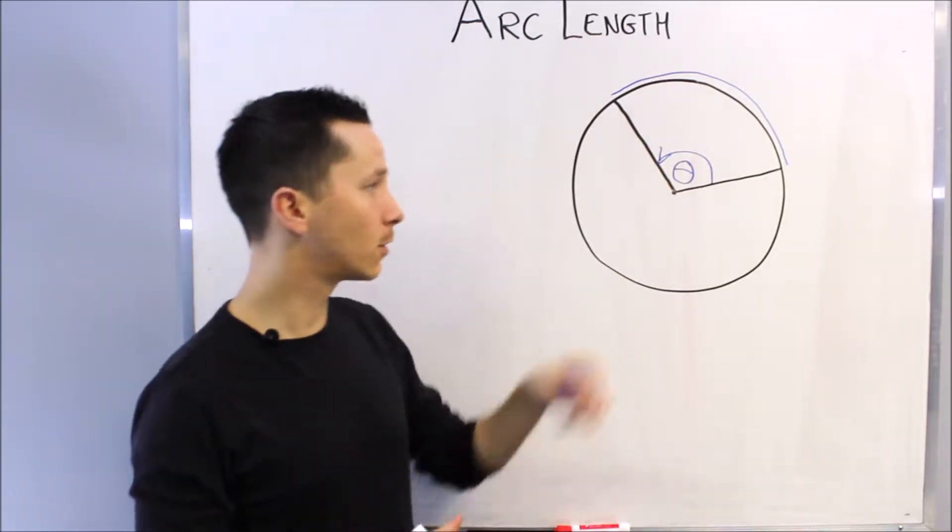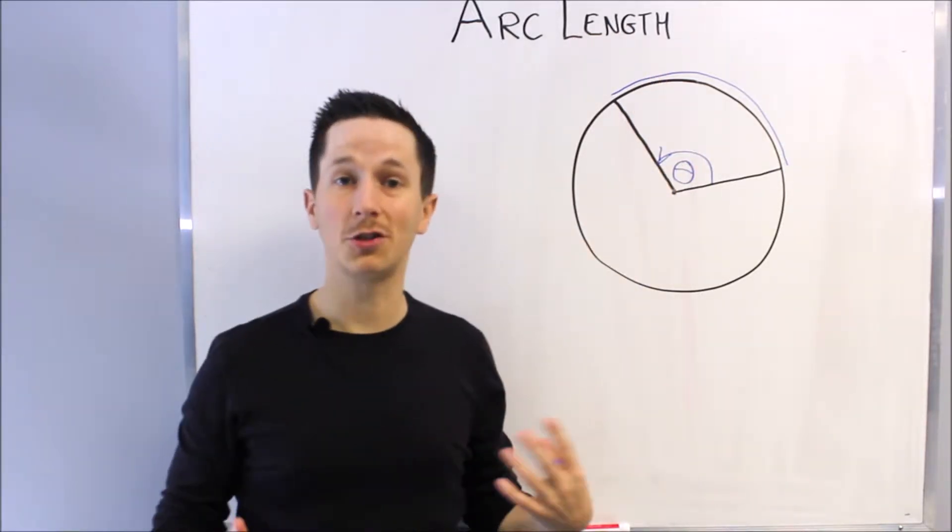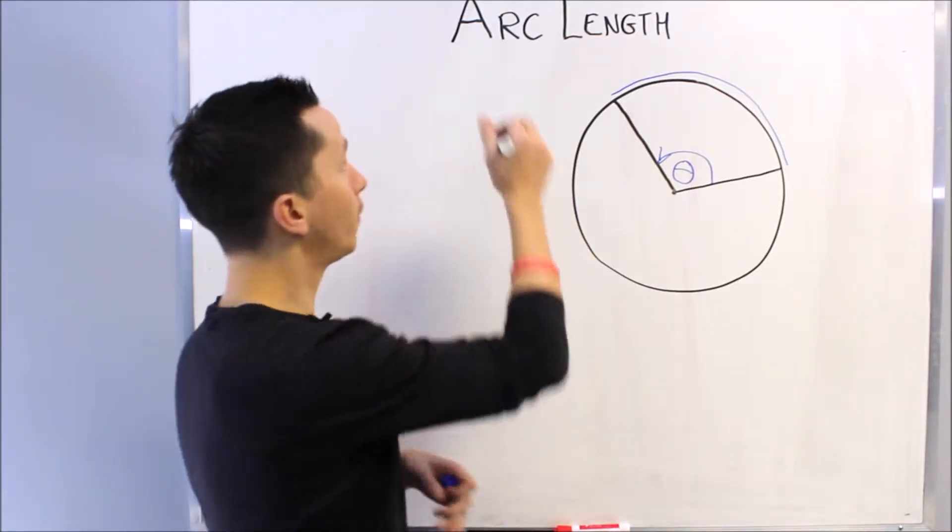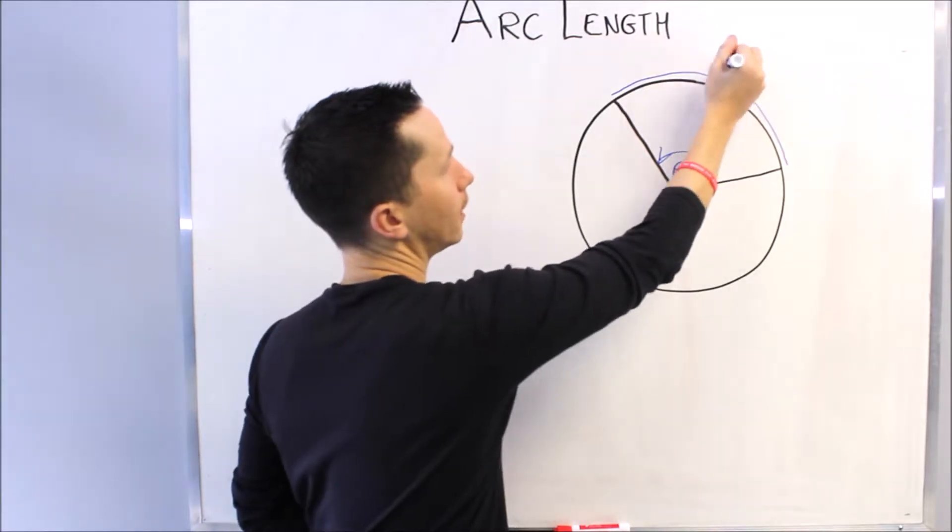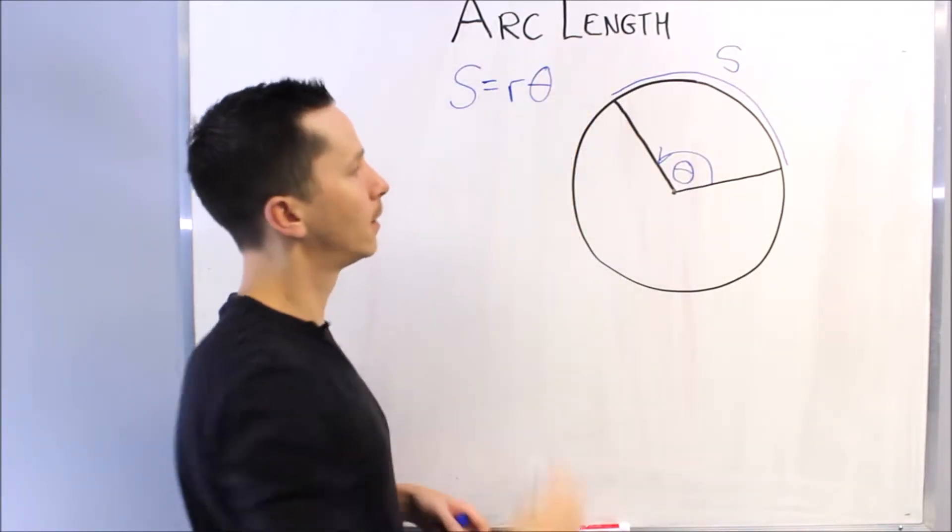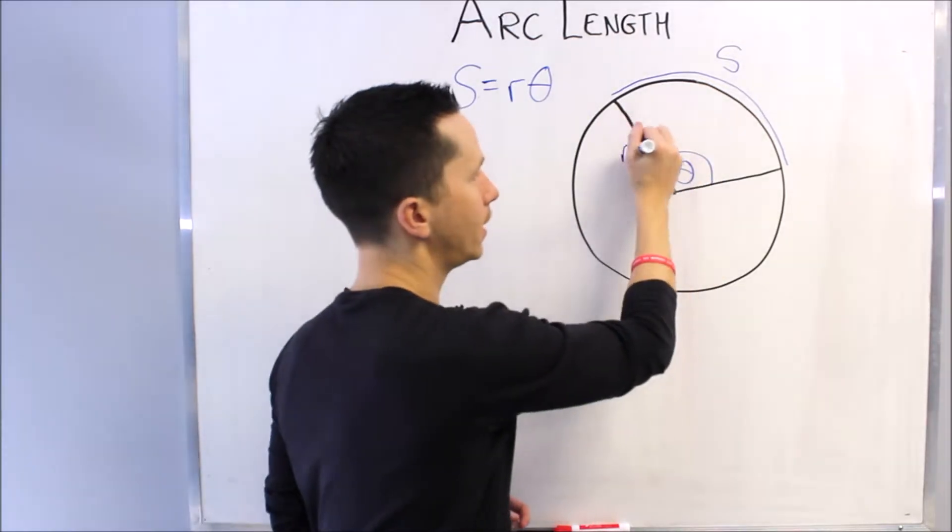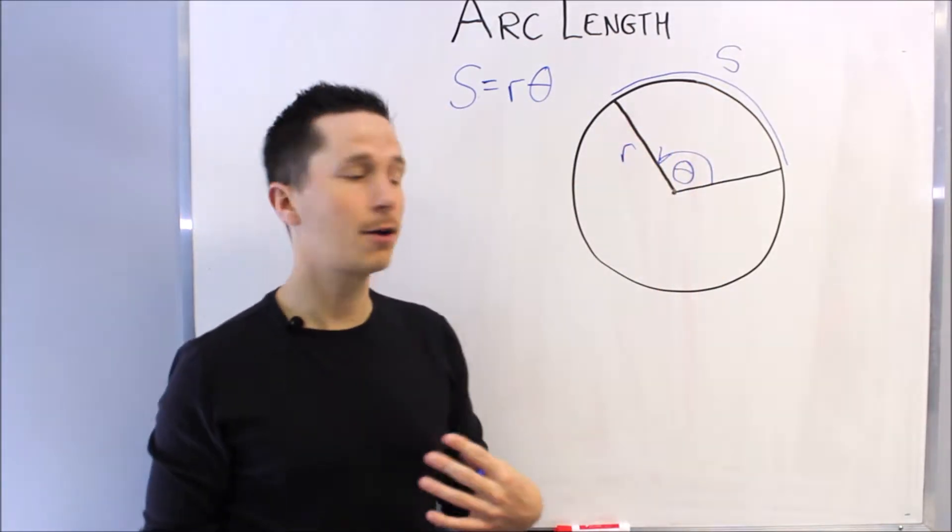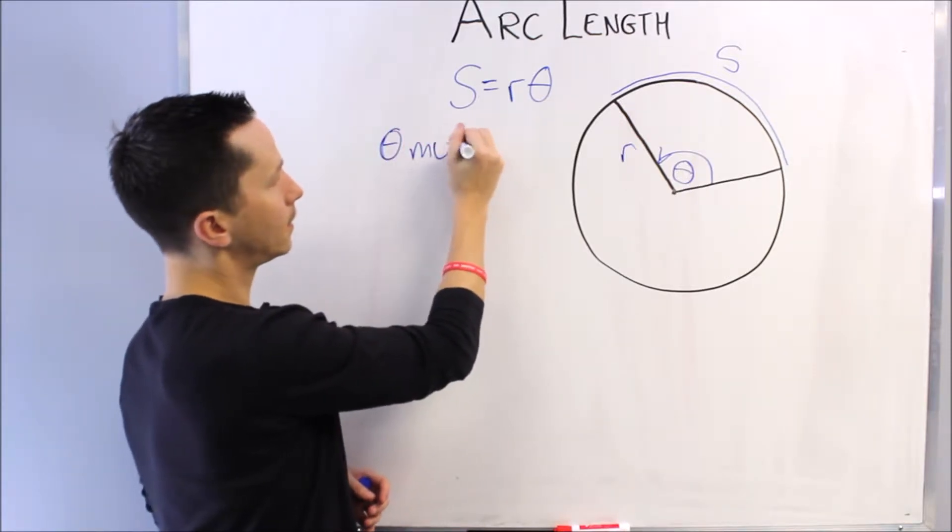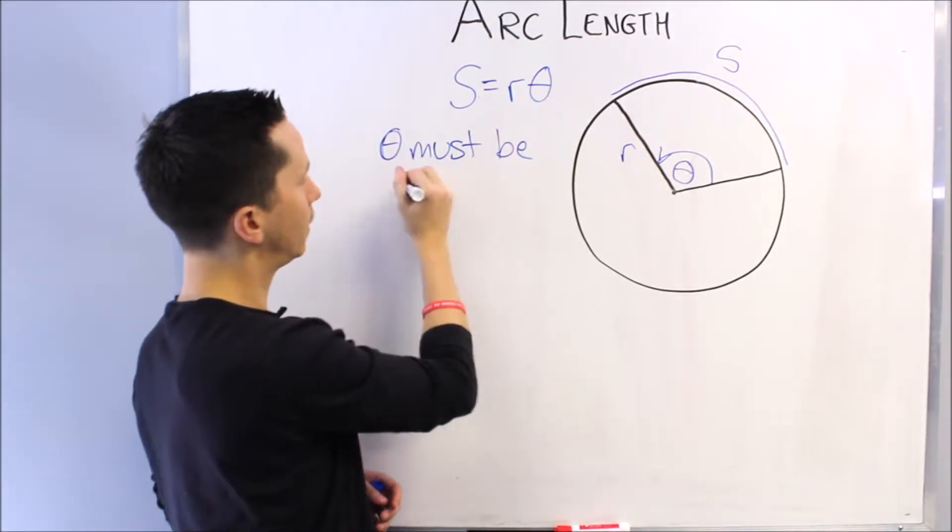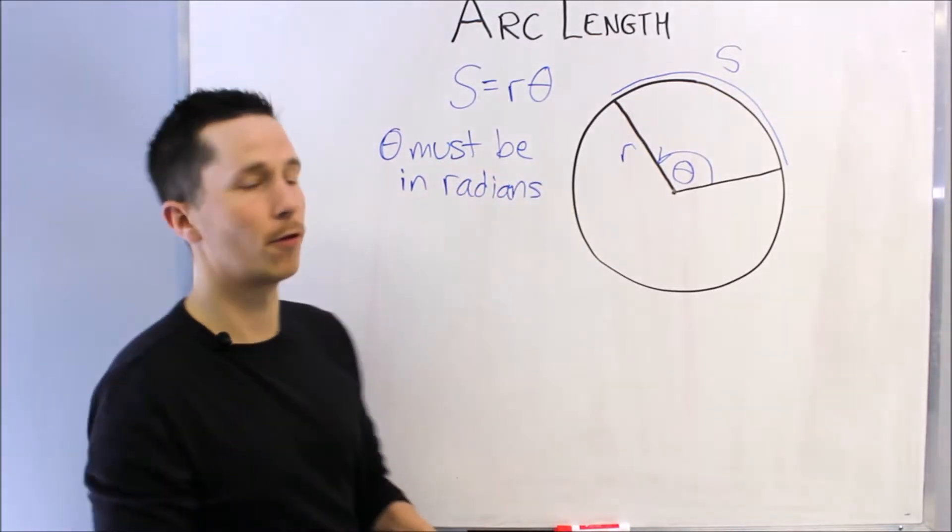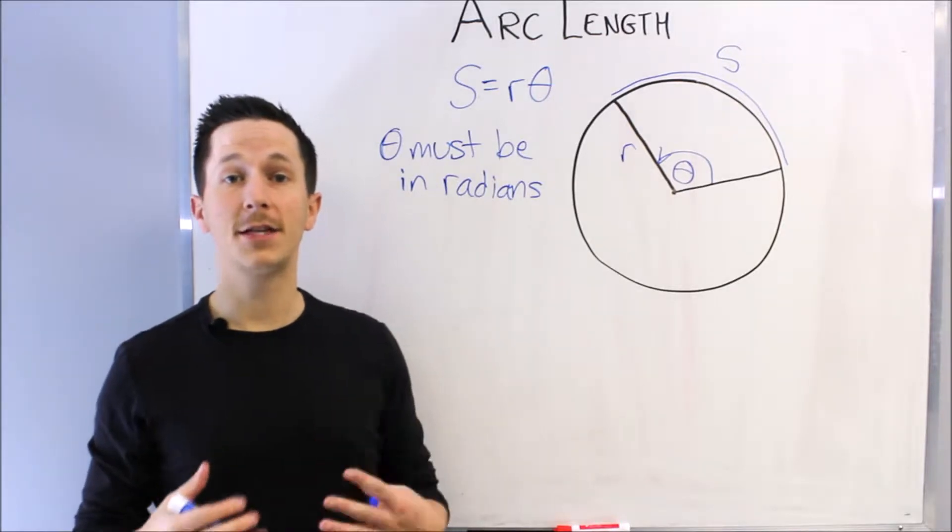And the formula, if we call s the arc length, s equals r theta, where r is obviously the radius, theta is the angle. But this is very important: theta must be in radians for this formula to work. And this is where they always ask us a question, and they'll often give the central angle in terms of degrees.